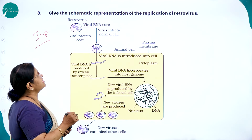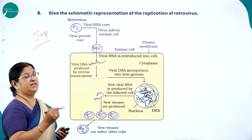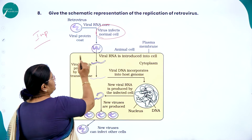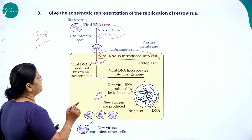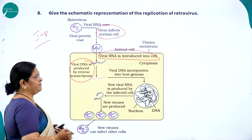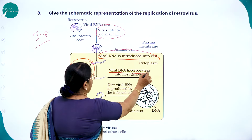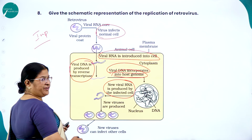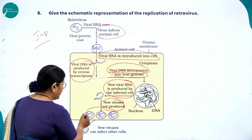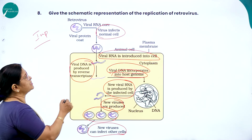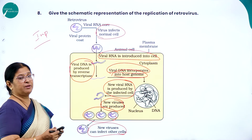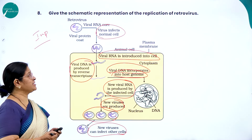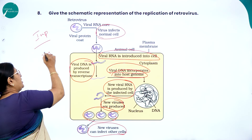This is a very important question: the schematic representation of the replication of retrovirus which causes AIDS. The retrovirus RNA core infects normal cells; viral RNA is converted into viral DNA by reverse transcriptase, which gets incorporated into the host genome. New viral RNA is produced by the infected cell and new viruses are produced, which can then infect other cells. This schematic diagram is asked for three-mark or five-mark questions.